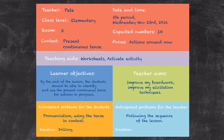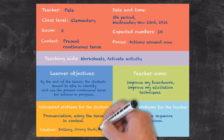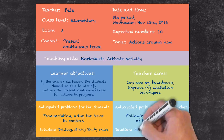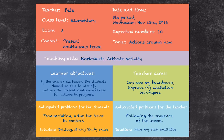For the students using the tense in context, that would be part of the activate activity. One thing I can do to overcome this problem is to have a strong study phase. By having that strong study phase, I can check that the students do understand this particular tense and its context before they actually try to use it. For the anticipated problem for the teacher — following the sequence of the lesson — the solution is to have my plan available throughout the lesson.